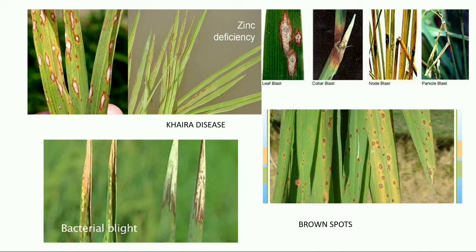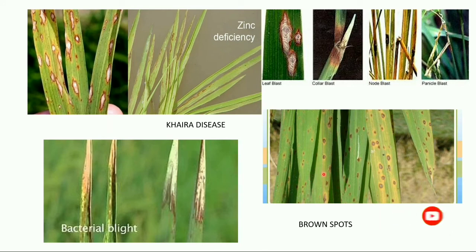Tricyclozole 75 WP at 2.5 grams per kg is used for control of brown spots. For bacterial leaf blight, seed treatment with streptocycline 1 gram plus carbendazim 50 WP 20 grams for 8 to 10 kg of seed in 10 liters of water for 12 to 15 hours is the recommended control.